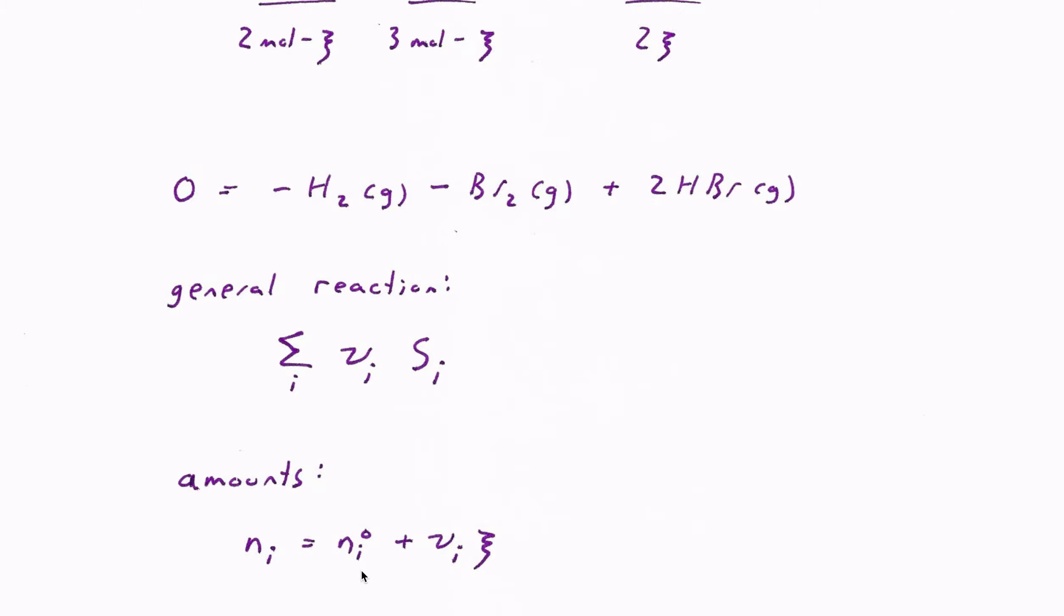Same thing is generally going to be true. However much we initially have, the initial amount of some species, changes by stoichiometric coefficient, which could be positive or which could be negative, multiplied by the extent of reaction. So if I know how much the reaction has preceded, I can predict how much of each species there is.